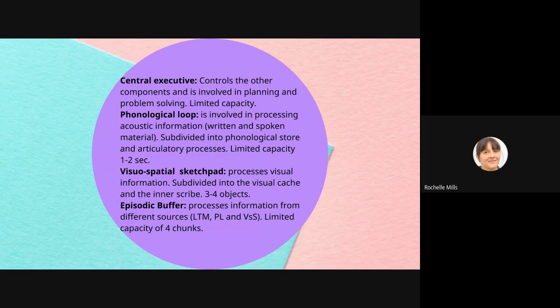Then we have the episodic buffer, which processes information from different sources — it processes information from our long-term memory, the phonological loop, and the visuospatial sketchpad. It was added later, in 2000. It's a temporary store for information — it's there if the other components become overloaded or we need to combine information from different stores. They added it to try and explain some of the discrepancies with the model. It has a suggested limited capacity of about four chunks, based on research conducted by Baddeley in 2012. The episodic buffer also links working memory to long-term memory and to other processes such as perception.